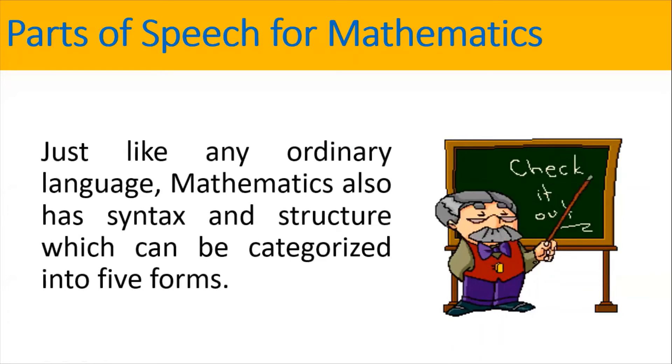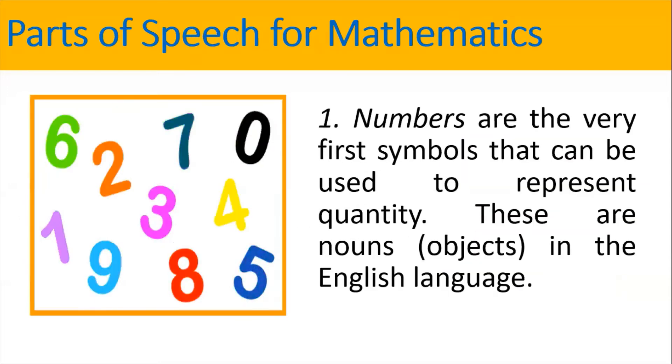Just like any ordinary language, mathematics also has syntax and structure, which can be categorized into five forms. Numbers are the very first symbols that can be used to represent quantity. These are nouns in the English language.